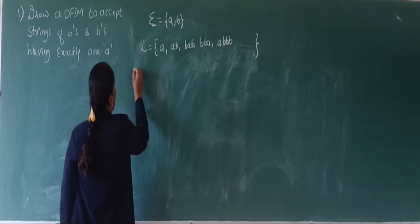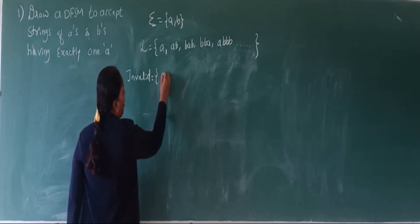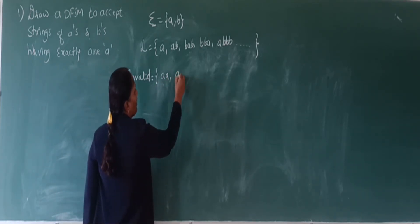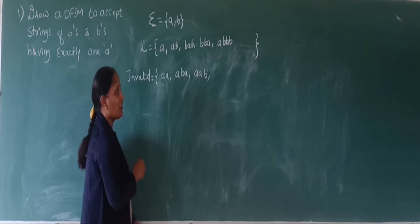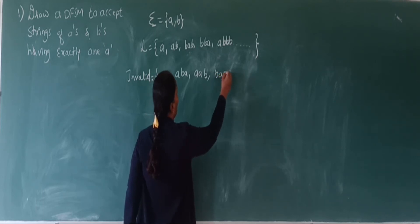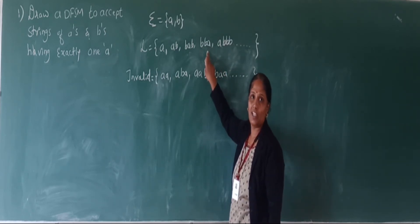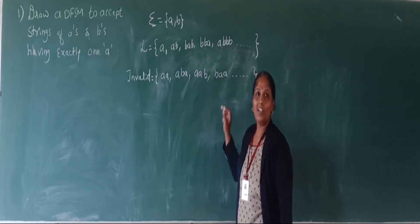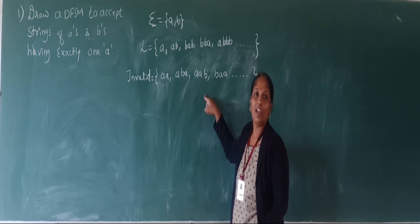You can also write the invalid strings: AA, ABA, AAB, BAA — in all these, A occurs more than one time. Before constructing a DFSM, you must write the valid and invalid strings for the language. Whatever DFSM you construct should accept the valid strings and must not accept the invalid strings.